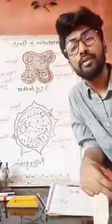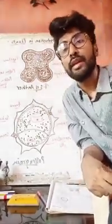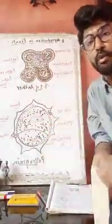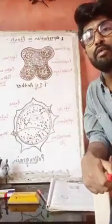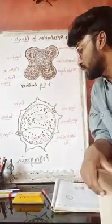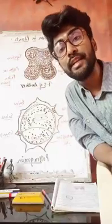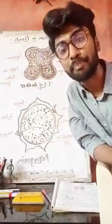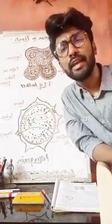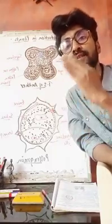Now let's study the structure of the pollen grain in detail. I have drawn a labeled diagram of the pollen grain. The pollen grain is best defined as a partially developed male gametophyte — that is, the incompletely developed male gametophyte in its initial stage is known as the pollen grain.